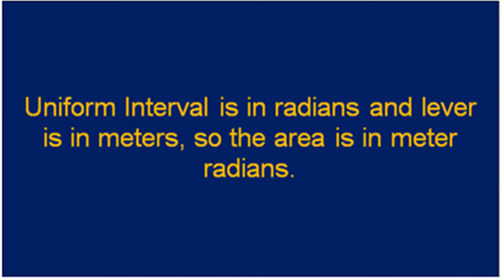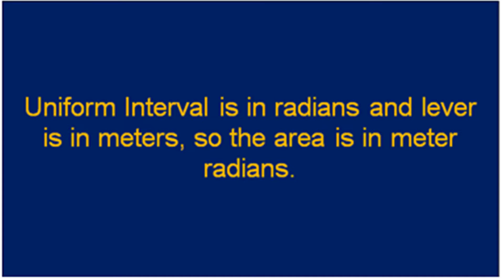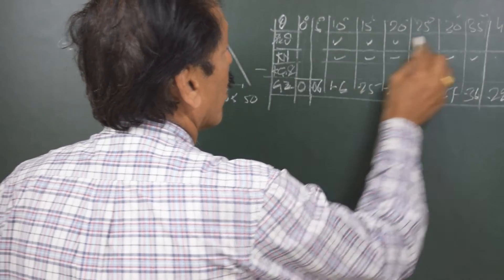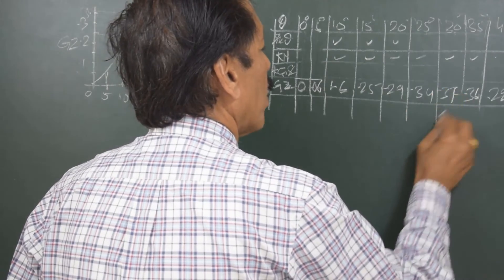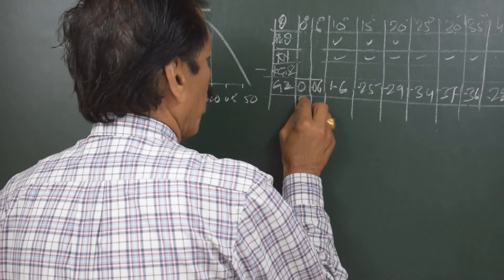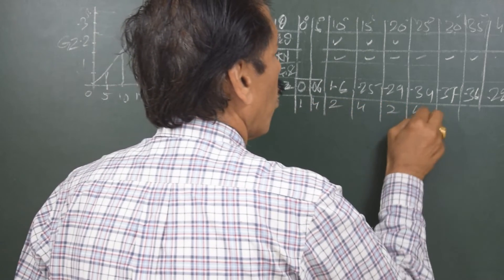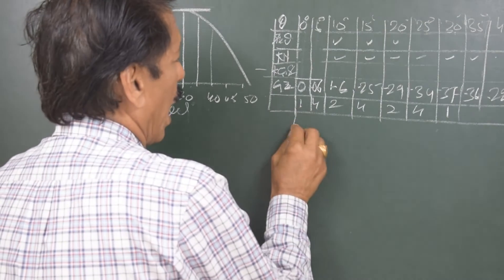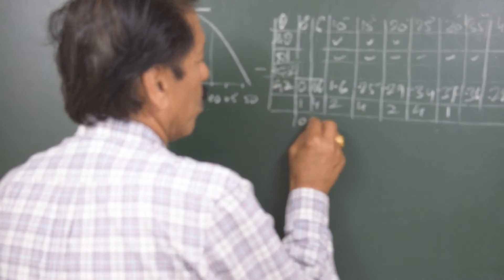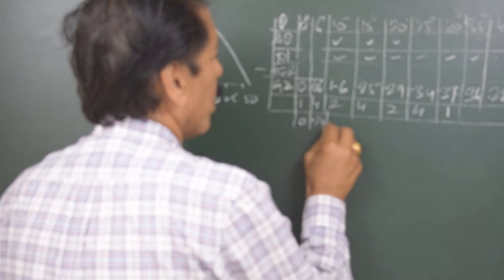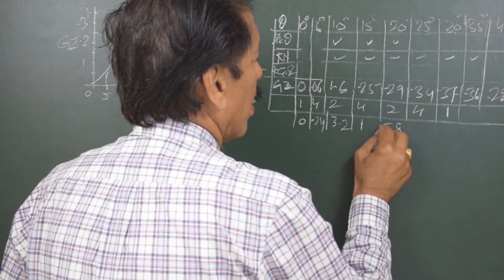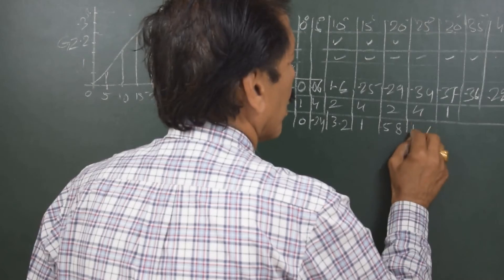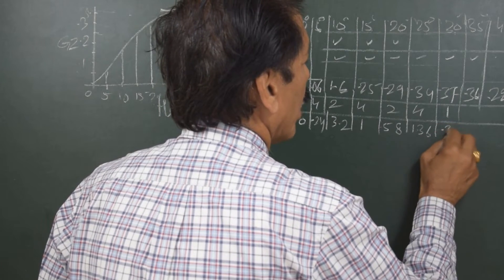Area under the curve we will have to find out by Simpson's and Simpson's that you have to find out the area up to 30 degrees. 1, 2, 3, 4, 5, 6, 7. So there are 7 ordinates and 6 segments. So the multipliers are going to be 1, 4, 2, 4, 2, 4, 1. Over here I have the product. So 0.24, 3.21, 0.58, 1.36, 0.37.